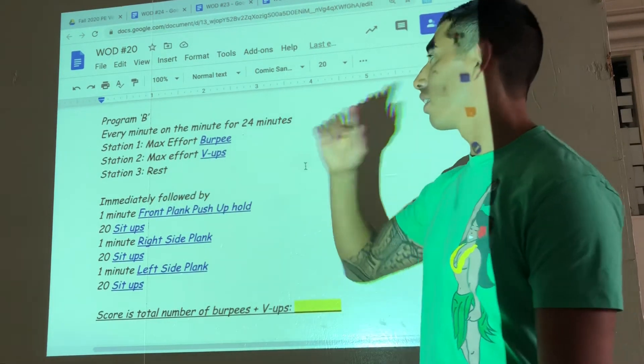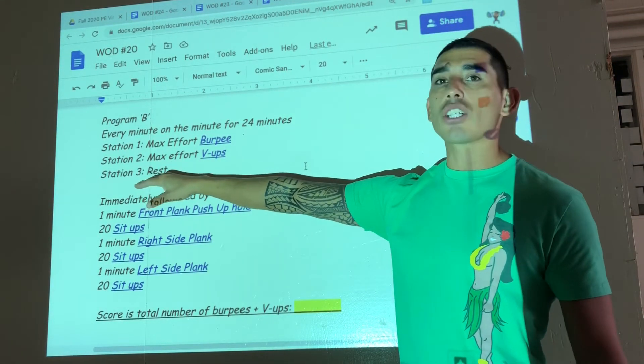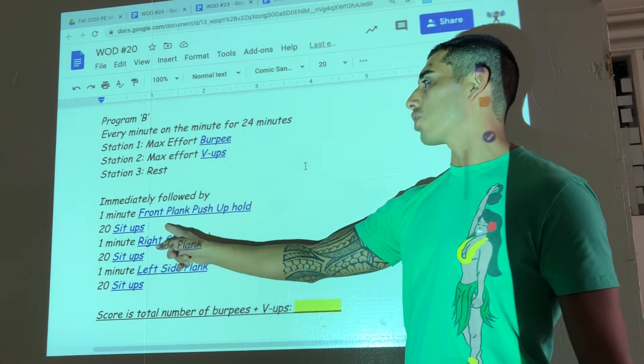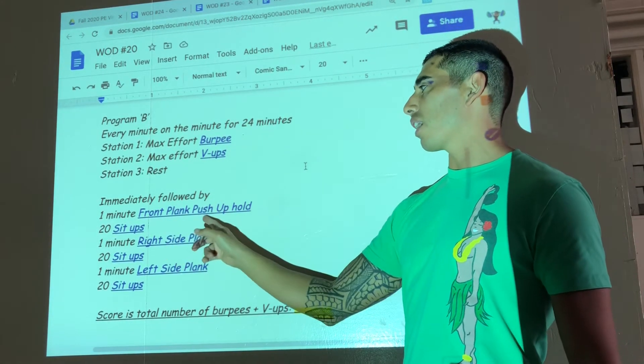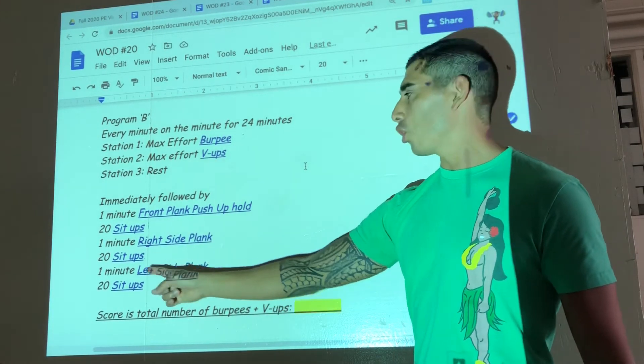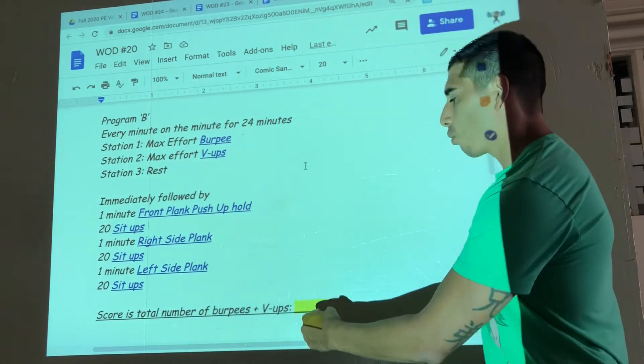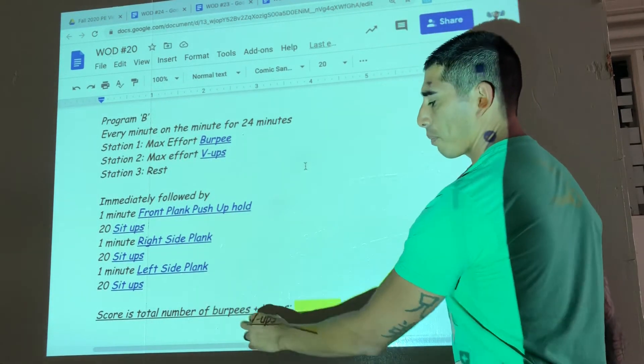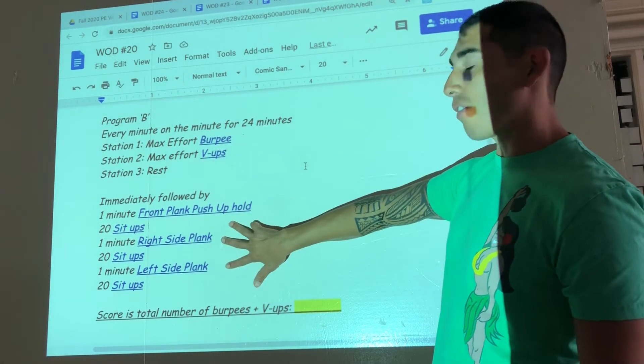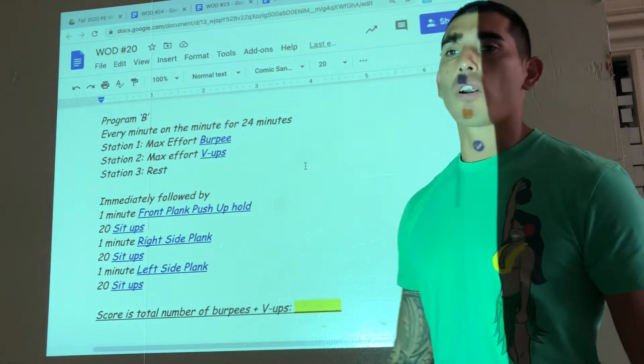Immediately after that last station of rest, at 24 minutes and one second, you will start one minute front plank push-up hold, 20 sit-ups, one minute right side plank hold, 20 sit-ups, one minute left side plank hold, 20 sit-ups. You will write your score of your burpees plus your V-ups, and if you did not have to rest during your plank holds. Selfie goes underneath.